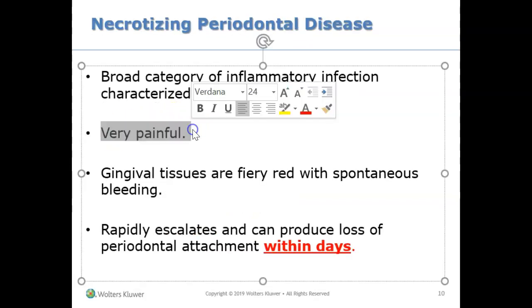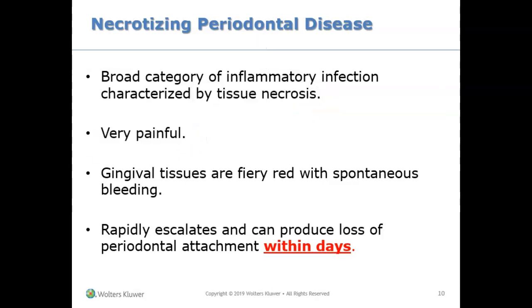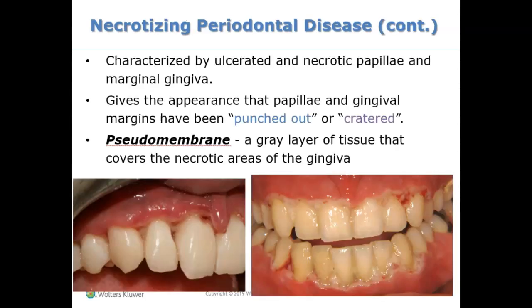Remember, the main symptom the patient will tell you is that it's very painful. All other periodontal diseases have no pain, but with this one there is pain, tissue necrosis, and tissue death. The tissues are so red and bleed spontaneously — sometimes you don't even touch it and you see bleeding. The amount of tissue death can happen so quickly, like within days you can see the tissue dying.